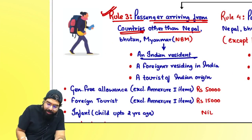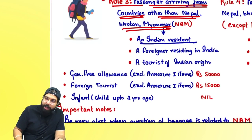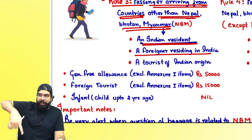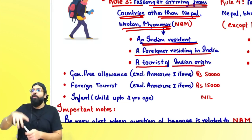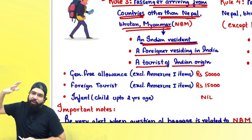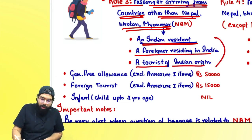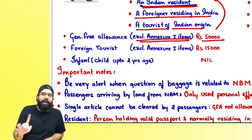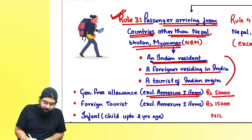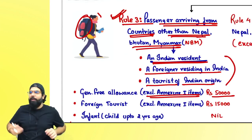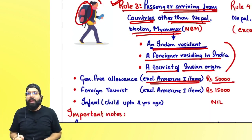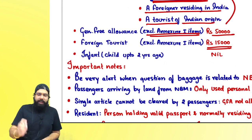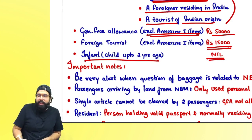Rule 3 says: for a passenger arriving from a country other than Nepal, Bhutan, and Myanmar, if you are an Indian resident, a foreigner residing in India, or a tourist of Indian origin who has settled abroad but is visiting India, you will be allowed 50,000 rupees general free allowance. For annexed items, general free allowance will not be given. For a foreign tourist coming from a country other than Nepal, Bhutan, and Myanmar, it is only 15,000. For an infant up to two years, it is nil.